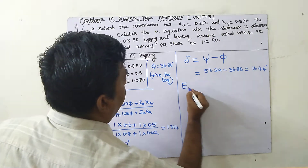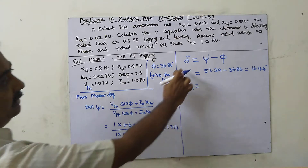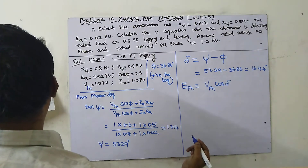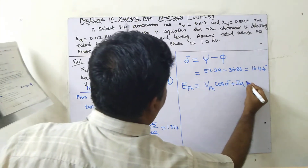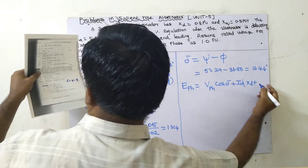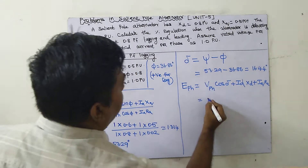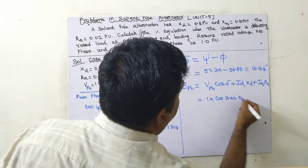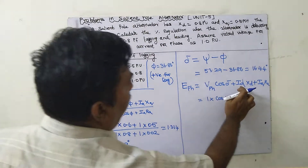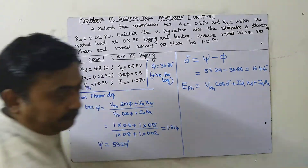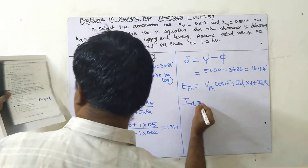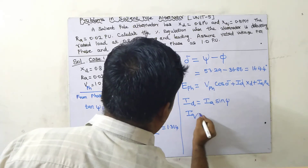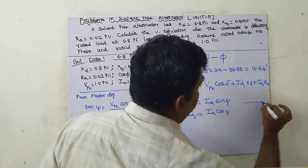From δ = 16.44°, we can directly calculate E_phase. The formula, derived from the phasor diagram, is: E_phase = V_phase·cos δ + Id·xd + Iq·ra. Before applying this, we need to calculate Id and Iq first.